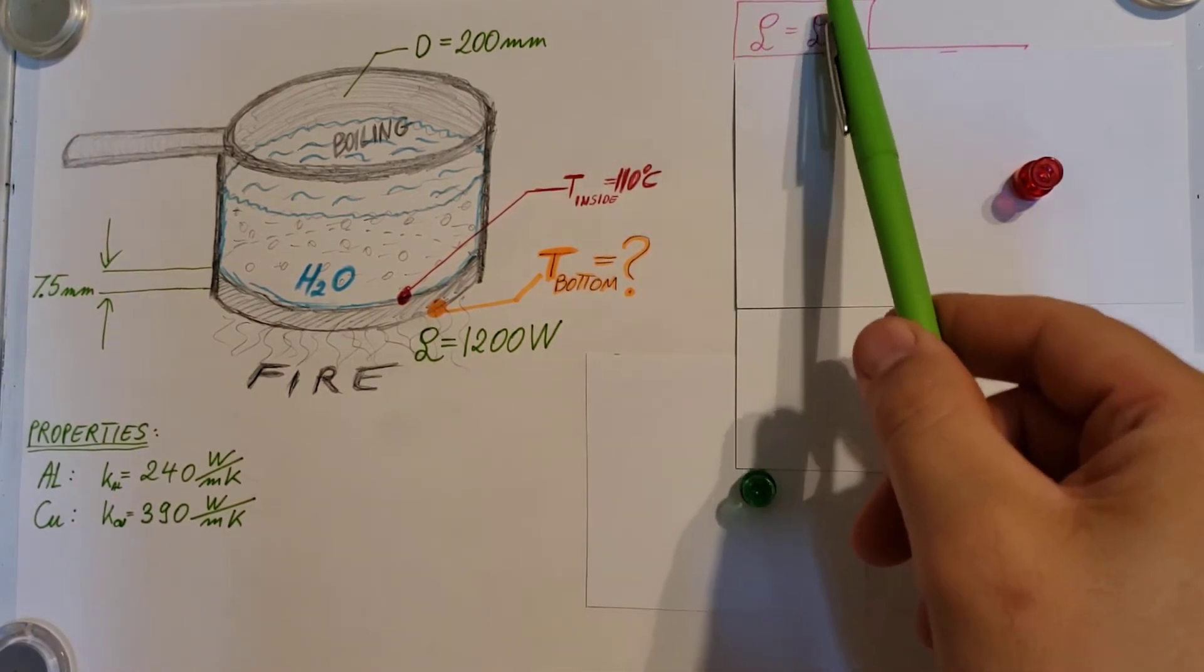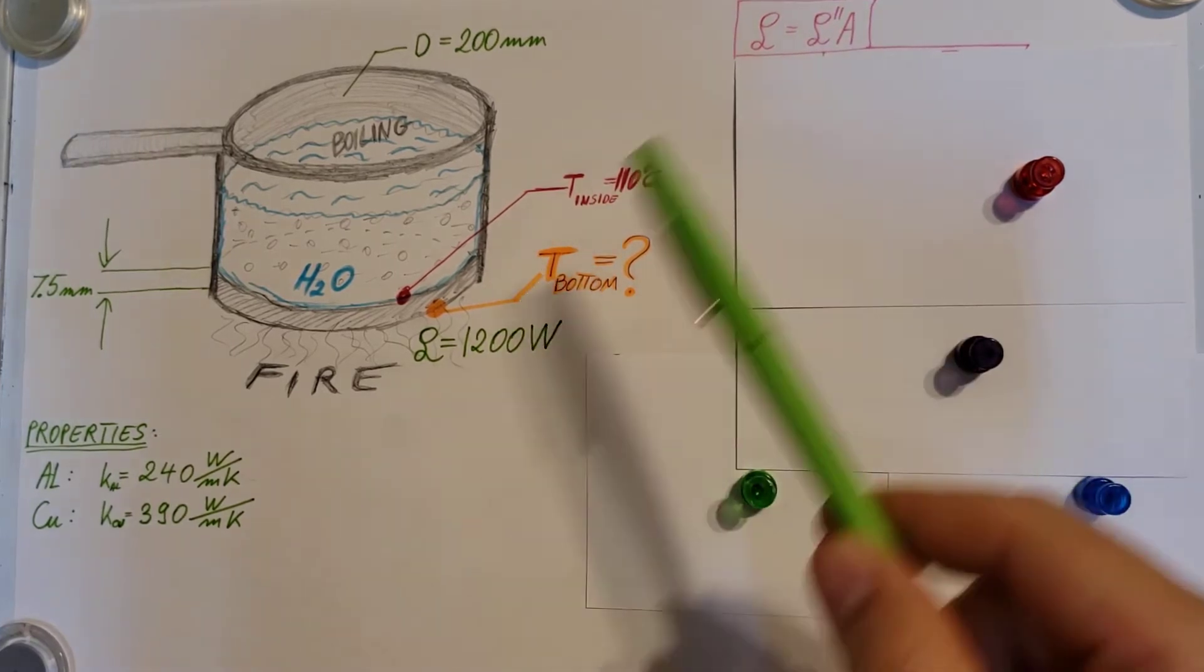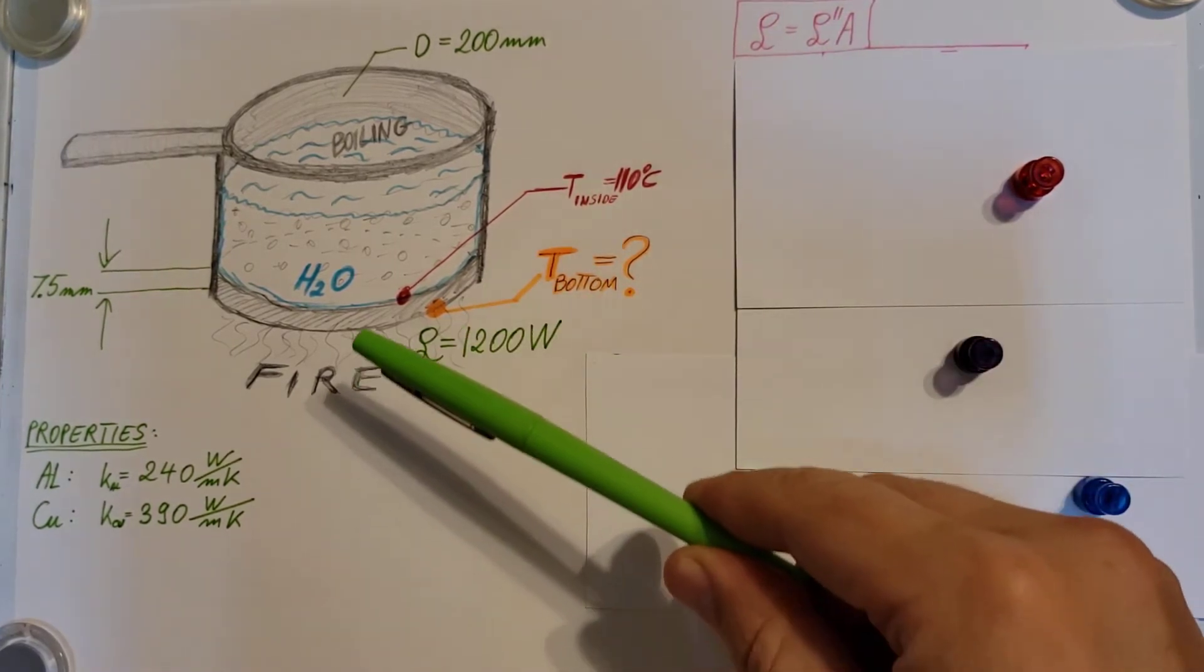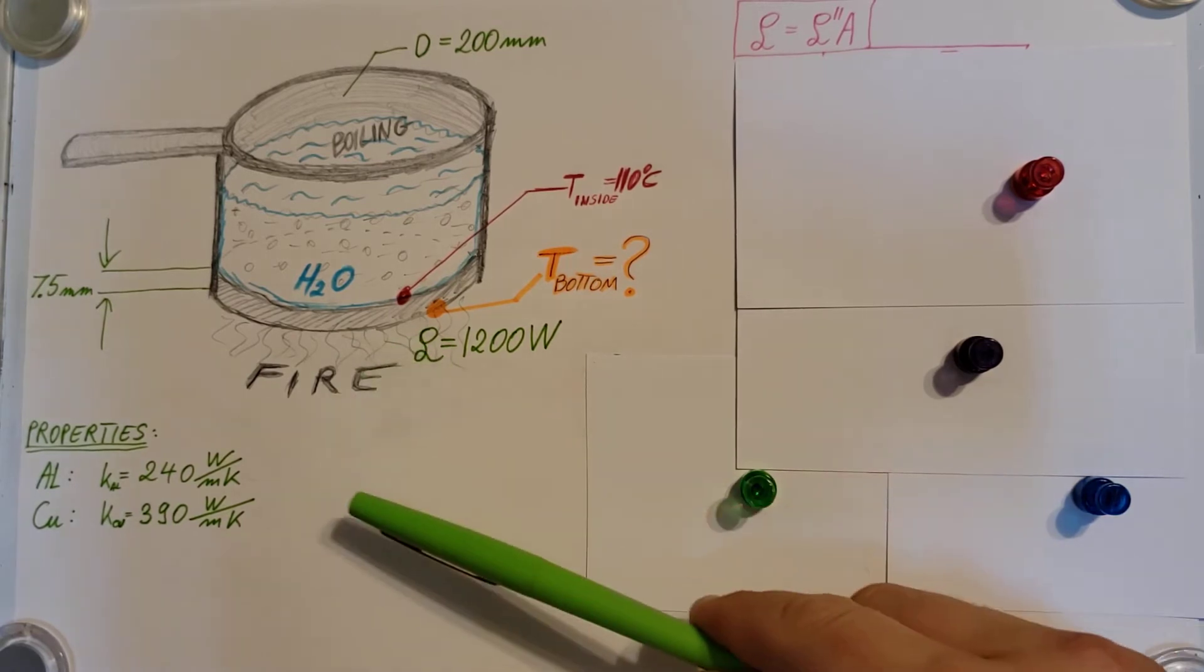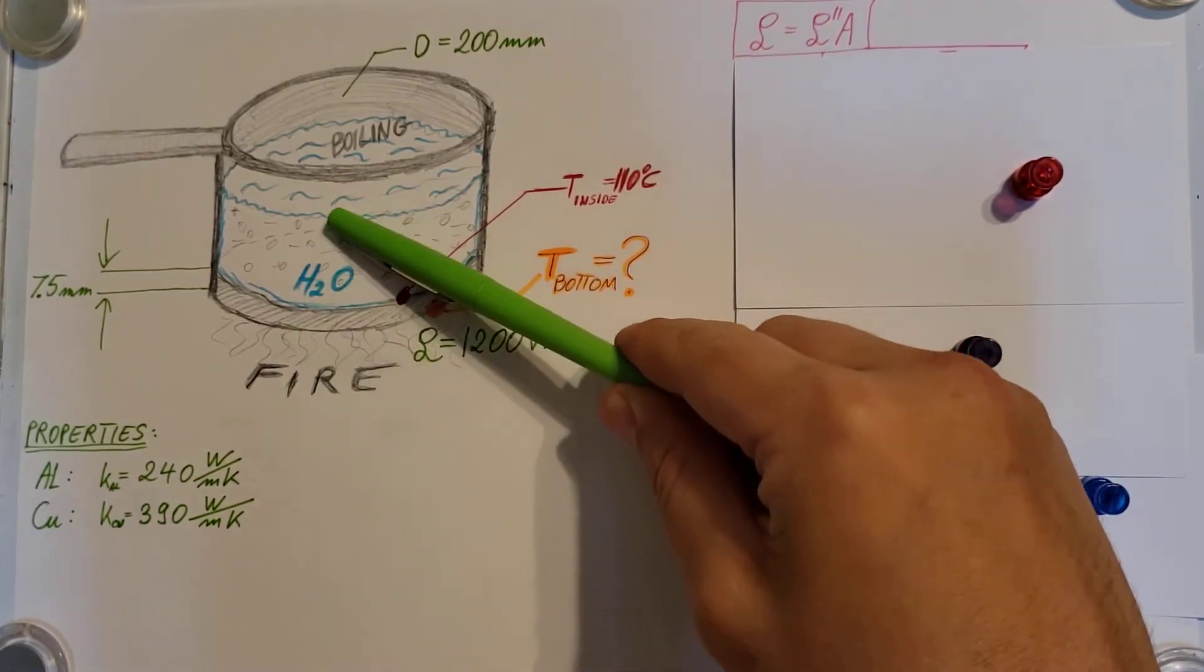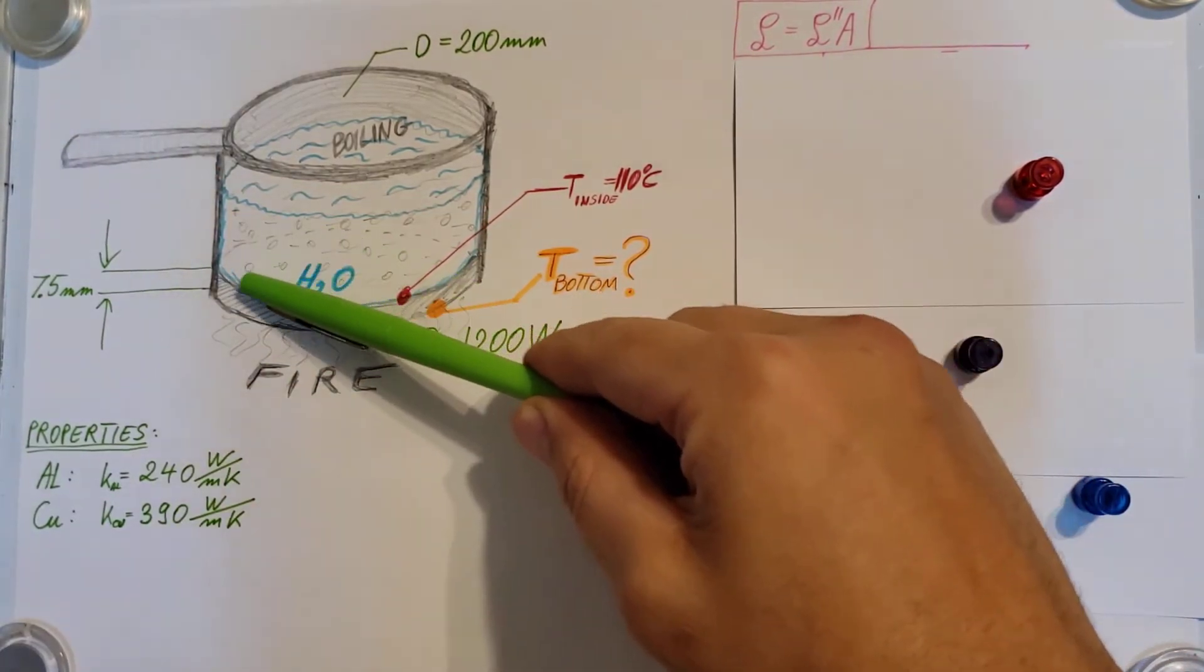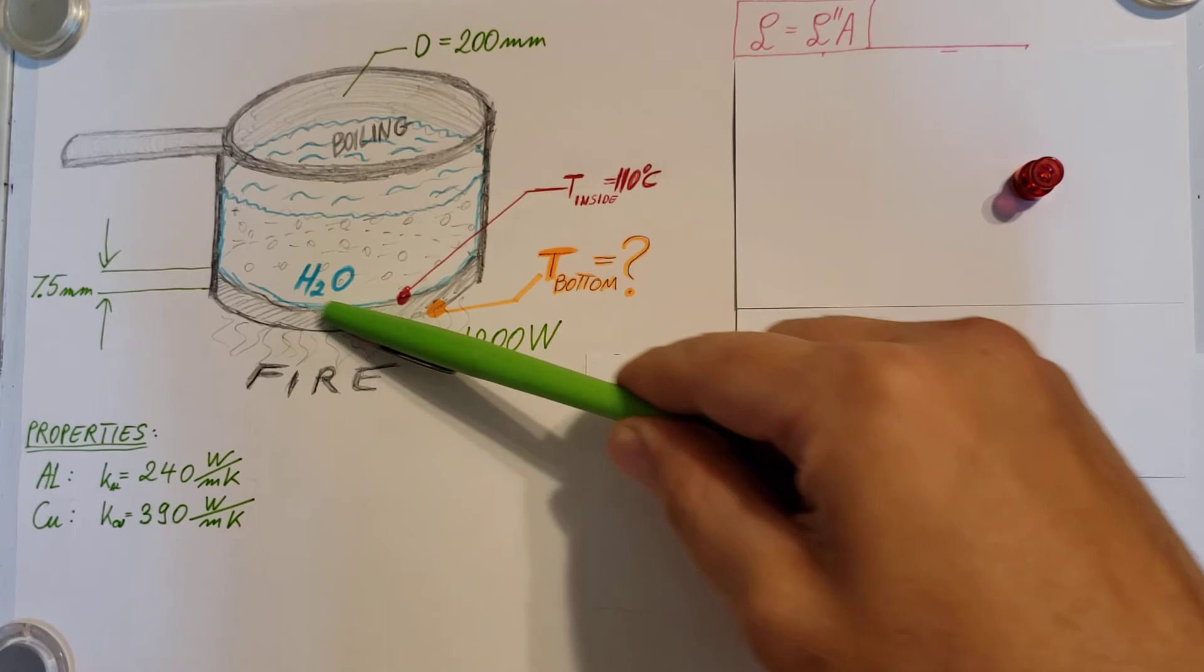Q equals Q double prime, which is the flux, times the area. This area is the area that's perpendicular to the direction of heat transfer, so basically the bottom surface of the pan.